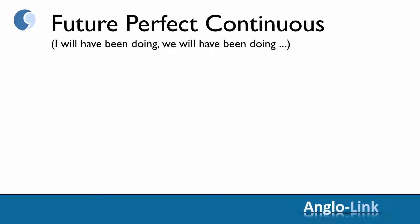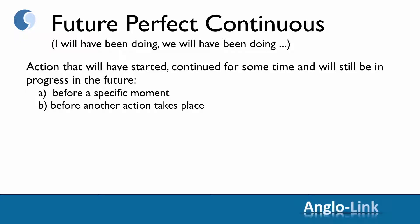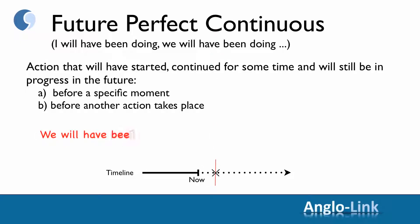And finally, future perfect continuous — I will have been doing, we will have been doing, etc. As you will remember, this is an action that will have started, will have continued for some time, and will still be in progress in the future, either before a specific moment or before another action takes place. For example: we will have been drinking for a few hours by the time we leave.